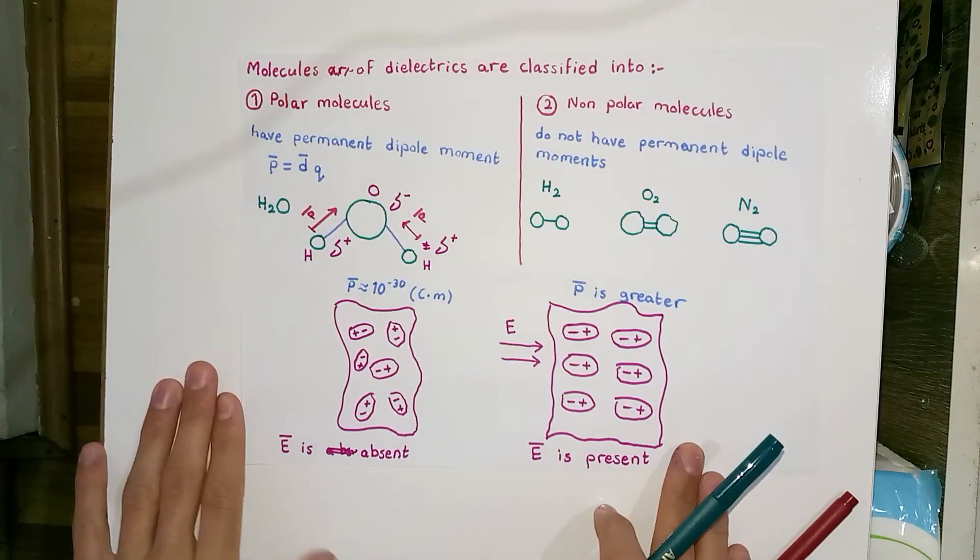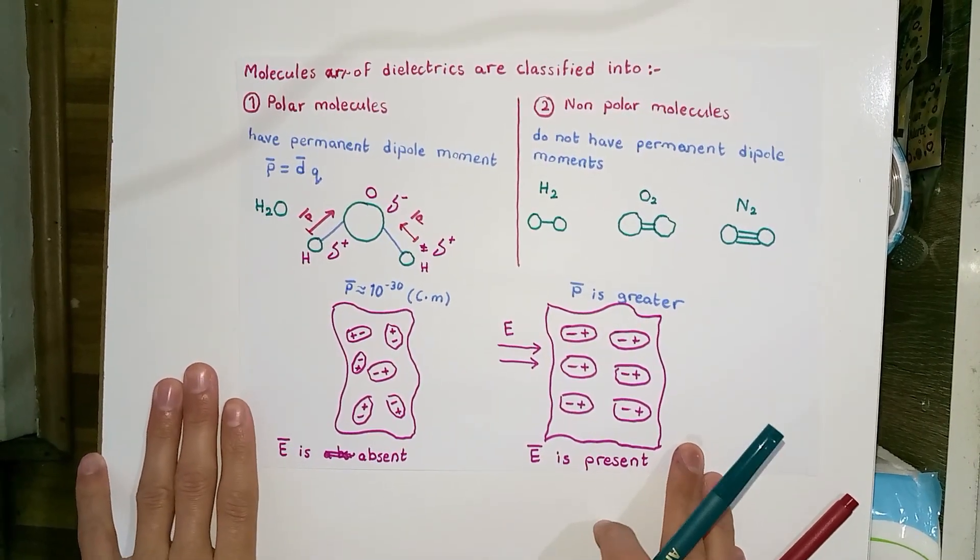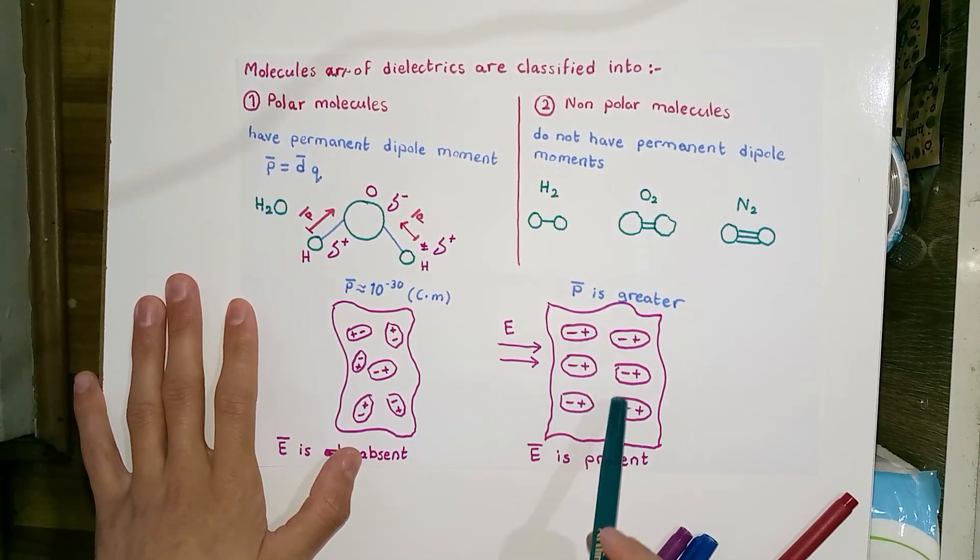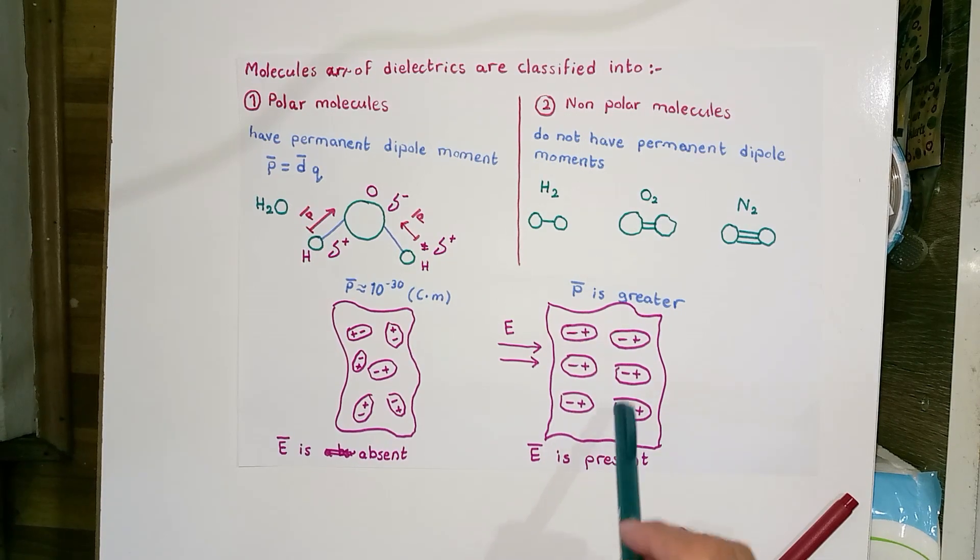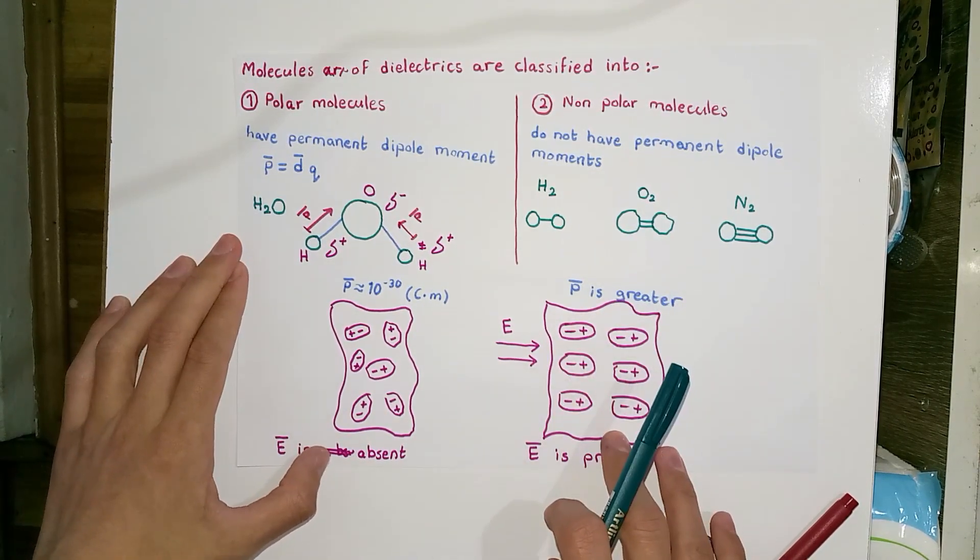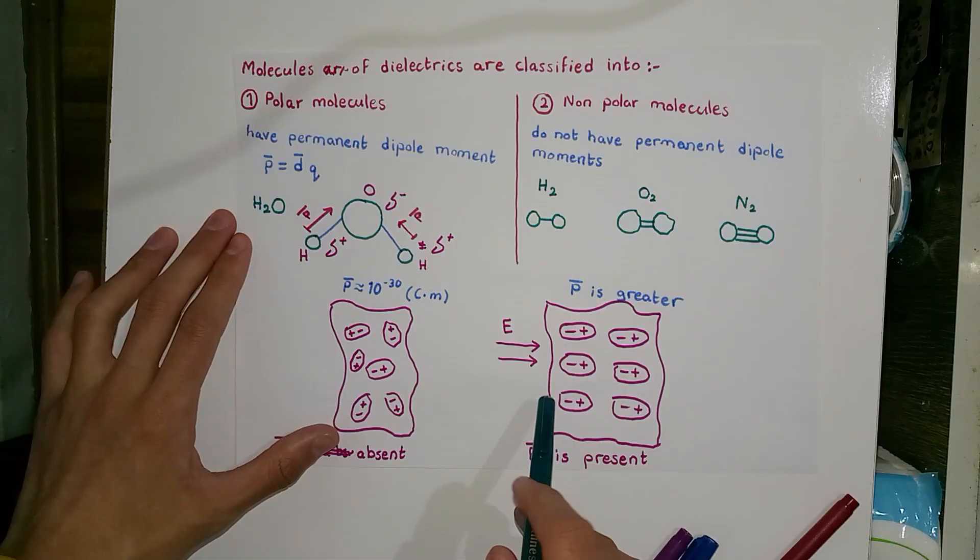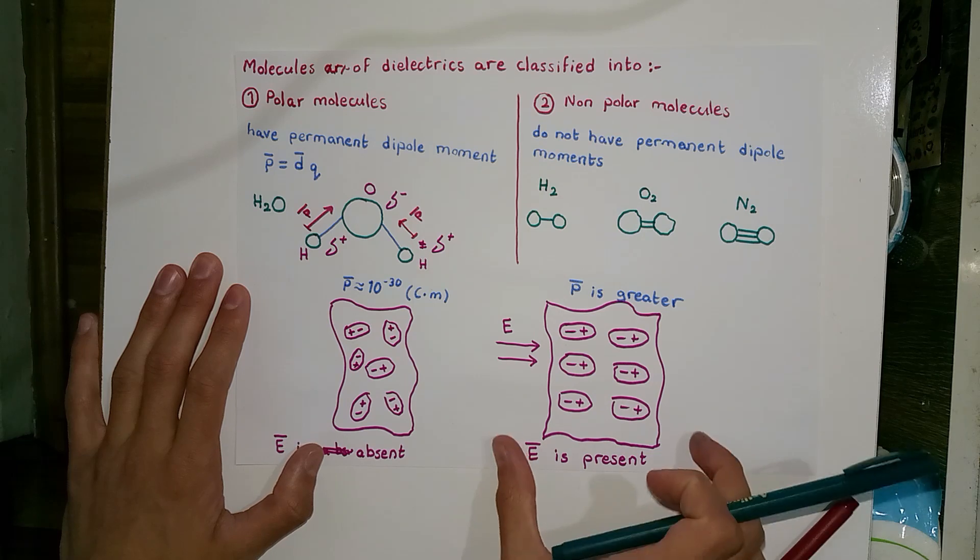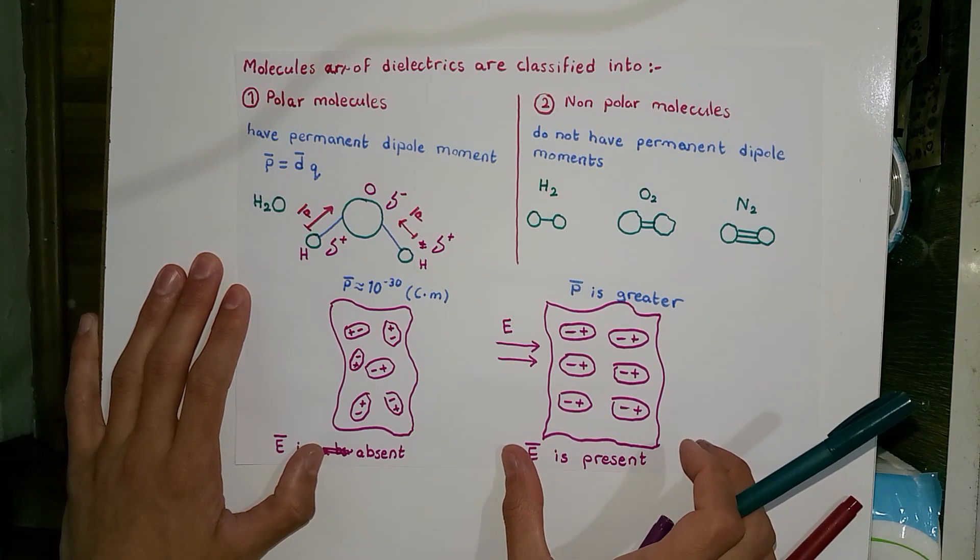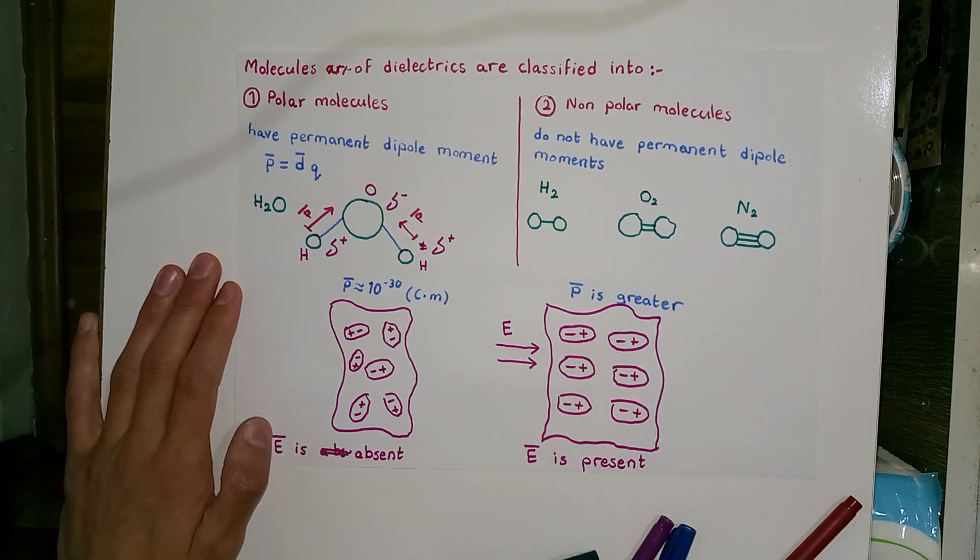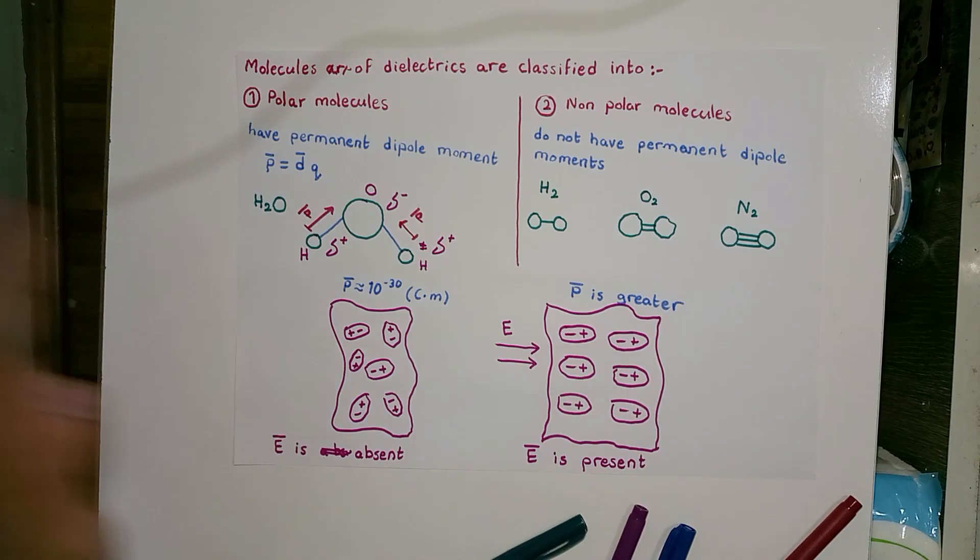In conclusion, the electric field penetrates into dielectrics and produces an electric dipole moment inside the dielectric, unlike conductors where the electric field inside is equal to zero. In the incoming lectures, we are going to concentrate more on the concept of the electric dipole moment for dielectrics. That's the end for today.